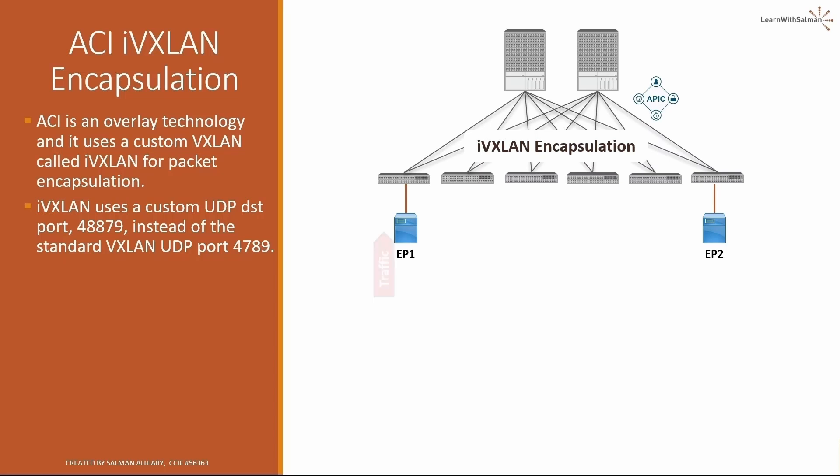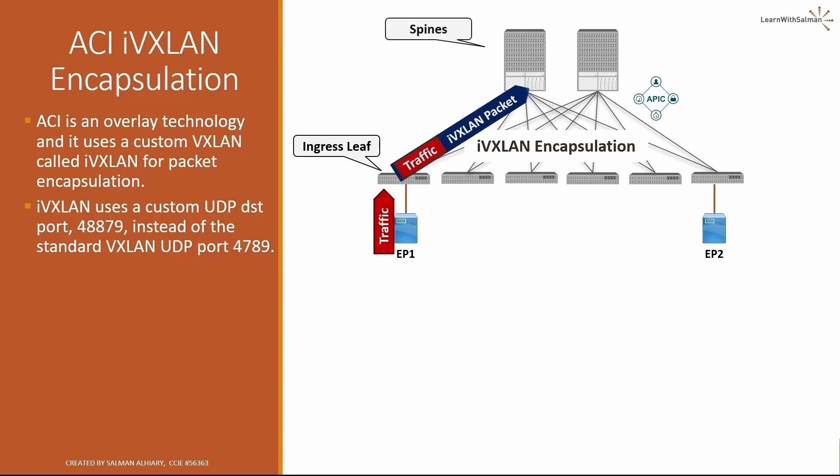For example, endpoint 1 sends traffic to endpoint 2. The traffic is received by the ingress leaf and encapsulated in an IVXLAN packet. Additional flags in the IVXLAN header are used to determine the sender's EPG identity and whether the policy is applied. As traffic enters the fabric, the ingress leaf encapsulates and applies policy to it, forwards it across the fabric through a spine switch, and the egress leaf decapsulates the traffic before it exits the fabric.